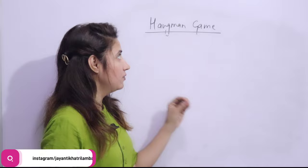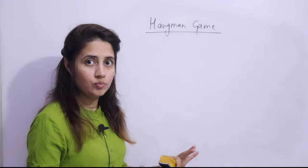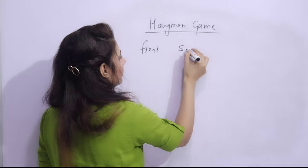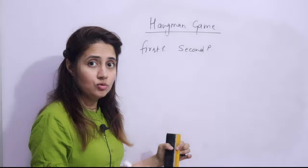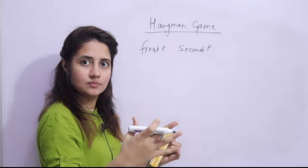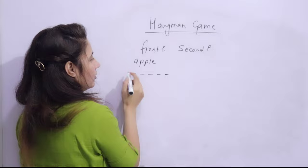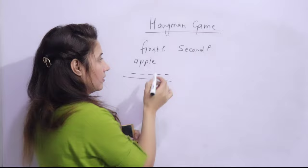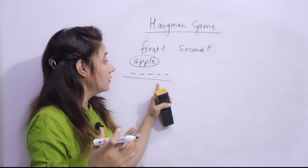With the help of an example I'll show you what kind of output there should be and how to play this game. Basically this game is a guessing game for two or more players. The first player will guess a word - it can be any word: fruits, food, vegetables, animal names, bird names. Suppose the first player has guessed 'apple' but will not tell the second player. Only five blank spaces are shown to the second player, not the word itself.